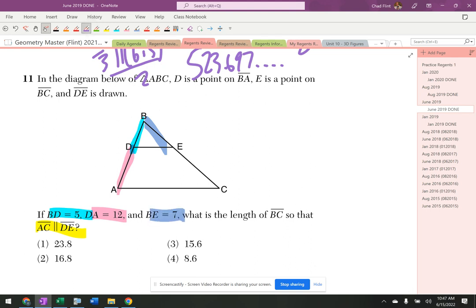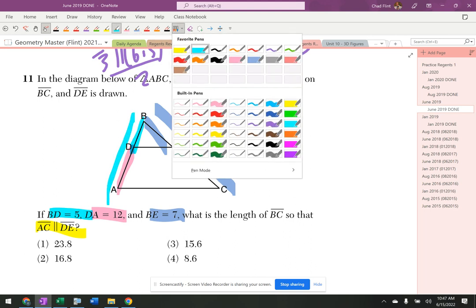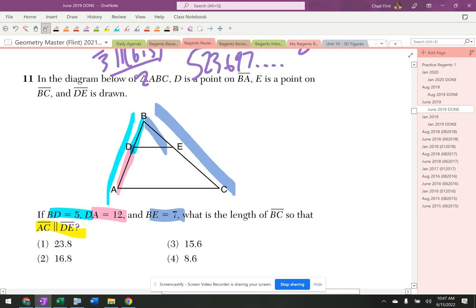So I've got similar triangles. So I need a purple side and a purple side, a blue side and a blue side, and then let's go with a kind of reddish color side and a reddish color side.